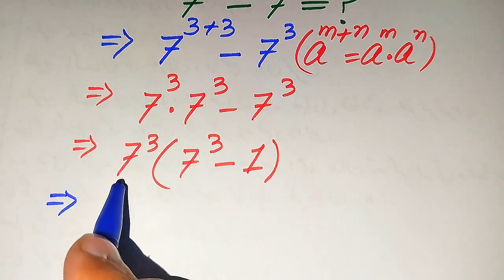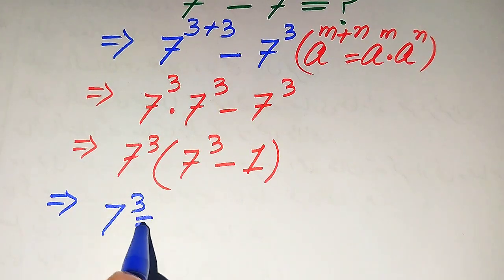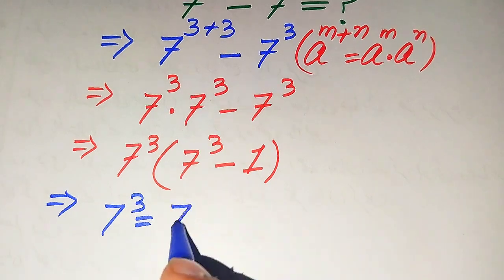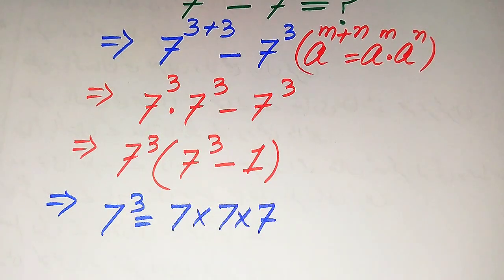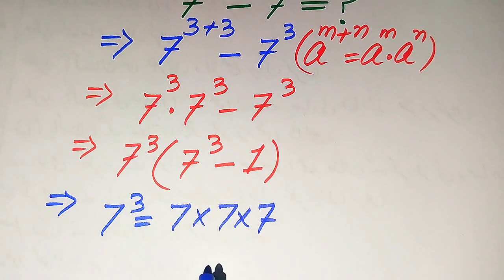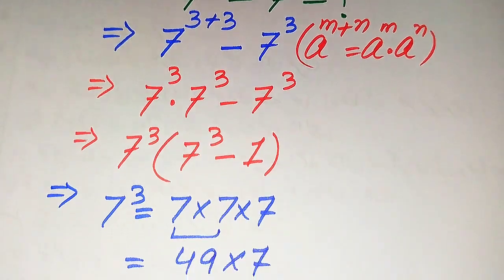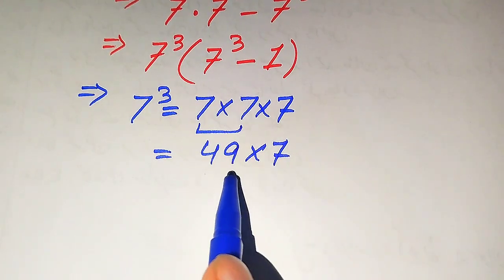In the next step we need to find the cube of 7. The meaning of 7 cubed is that we multiply 7 three times. Because the calculator is not allowed, we need to carry out all of these steps manually. So we multiply 7 three times, which we write out in full.